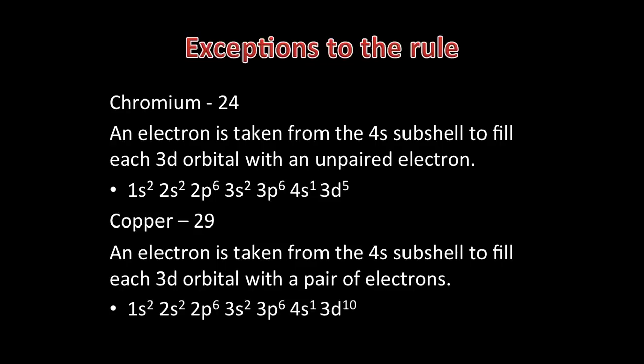When we move on to the next metal, the electron goes back and fills up the 4S subshell and the 3D orbitals continue to fill sequentially, and the electrons pair up in the orbitals. When copper is reached, in much the same way as chromium, an electron is then taken from the 4S subshell so all 3D orbitals can contain two paired electrons. So the electron arrangement of copper is 1S2, 2S2, 2P6, 3S2, 3P6, 4S1, 3D10.